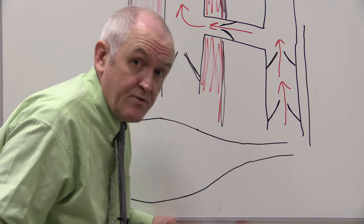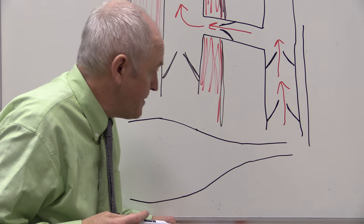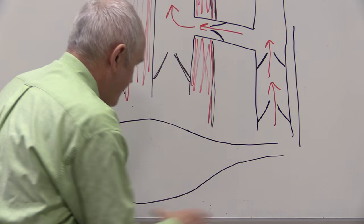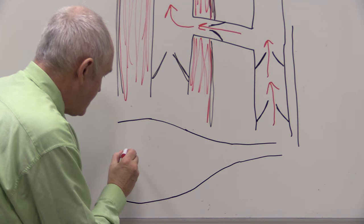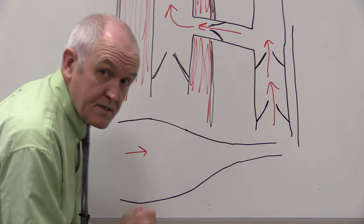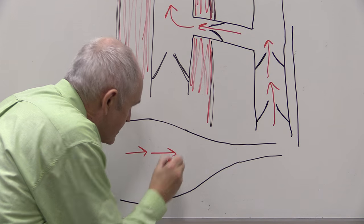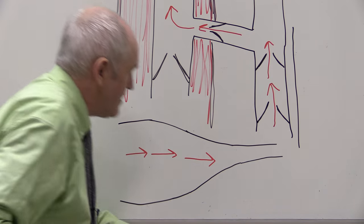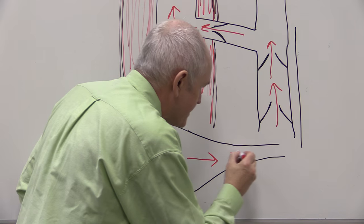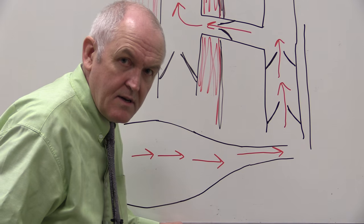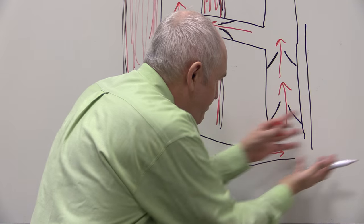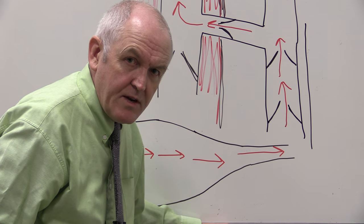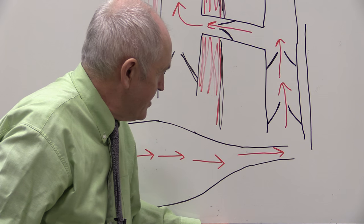The same effect is true in the superior vena cava, draining the top half of the body. This narrowing of total cross-sectional area increases the velocity. So blood flow is relatively slow in the capillaries, faster in the venules, faster in the larger veins, and faster still in the inferior vena cava, thereby speeding venous return in the inferior and superior vena cava.